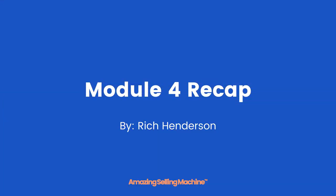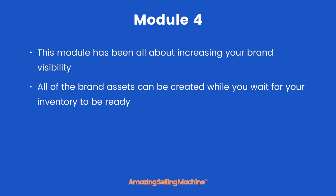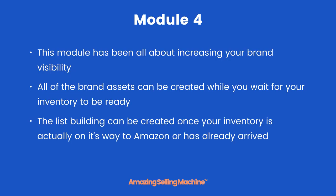Module 4 Recap and Action Steps. This module has been all about increasing your brand visibility. All of the brand assets can be created while you wait for your inventory to be ready, and the list building can be created once your inventory is actually on its way to Amazon or has already arrived.